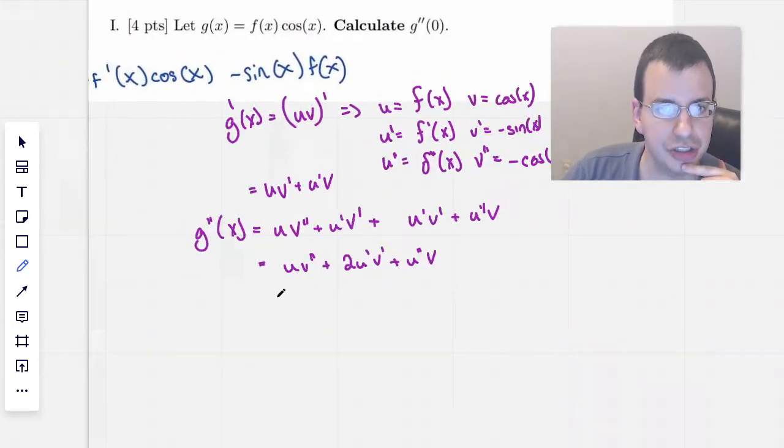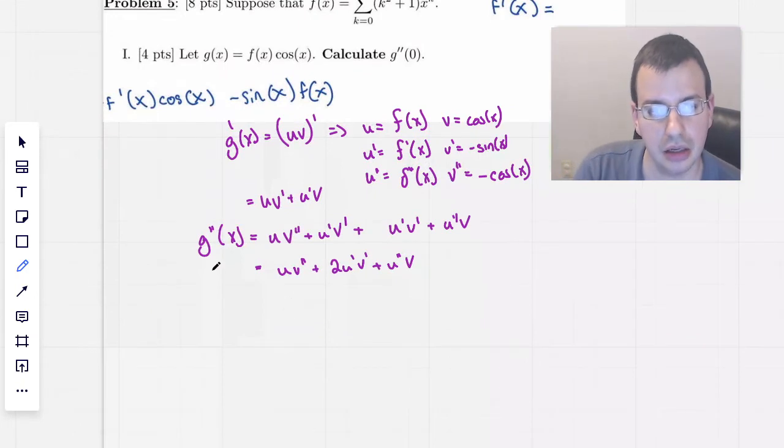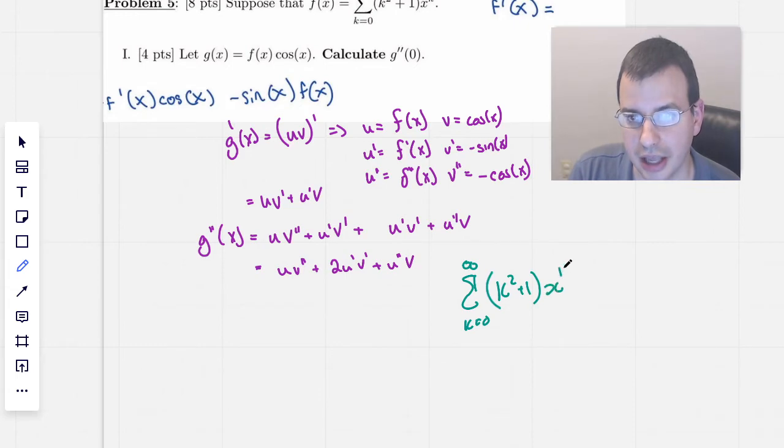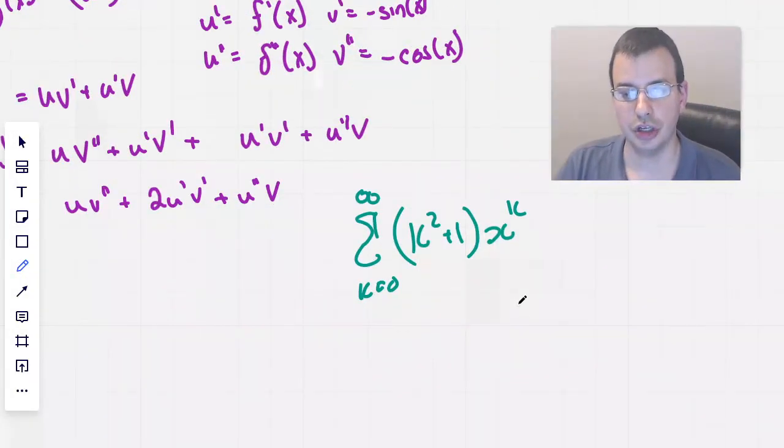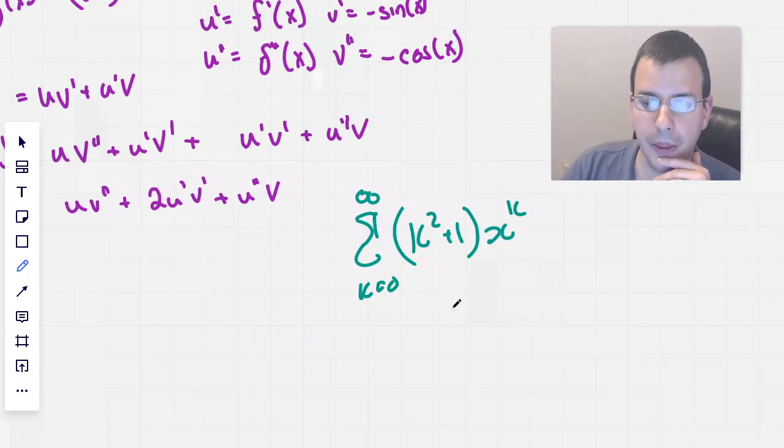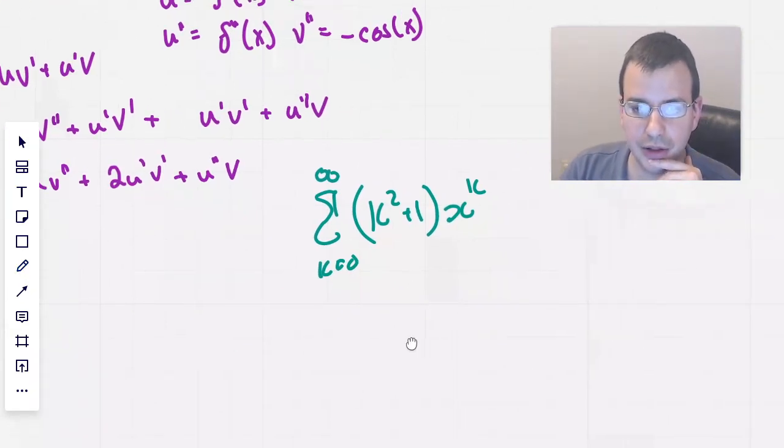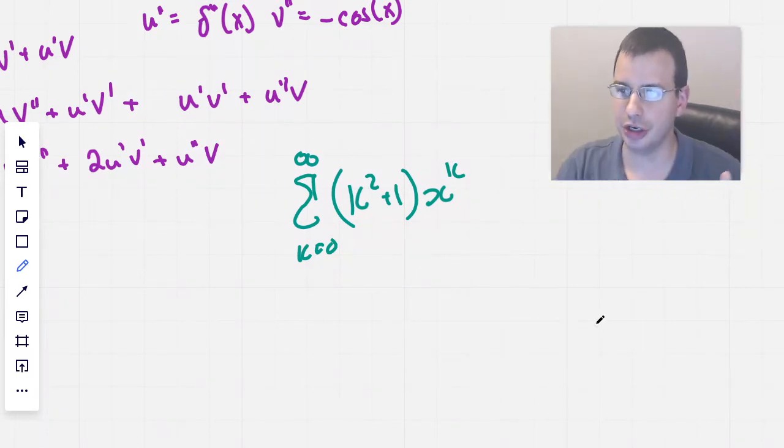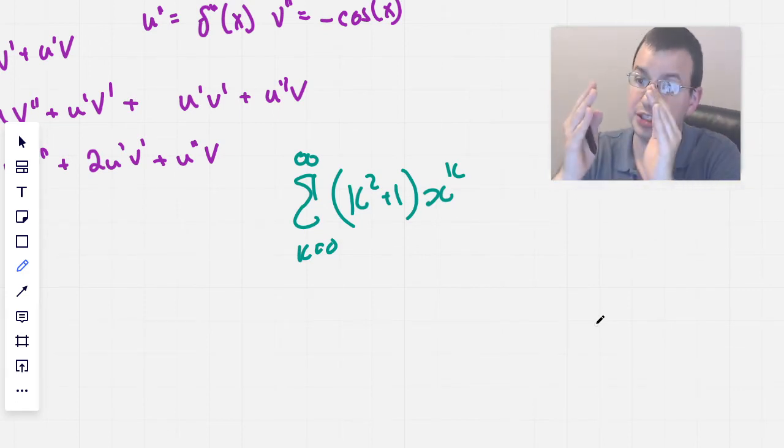So to do that, we're going to start by rewriting the summation. So we have summation k equals 0 to infinity, k² + 1, x to the k. And we want to find the derivative of this. So the proper way to probably do this, the more formal way, would be to expand the summation, write out the terms so you can see the pattern, take the derivative of each individual term along the way, and then recompress it back into a summation.